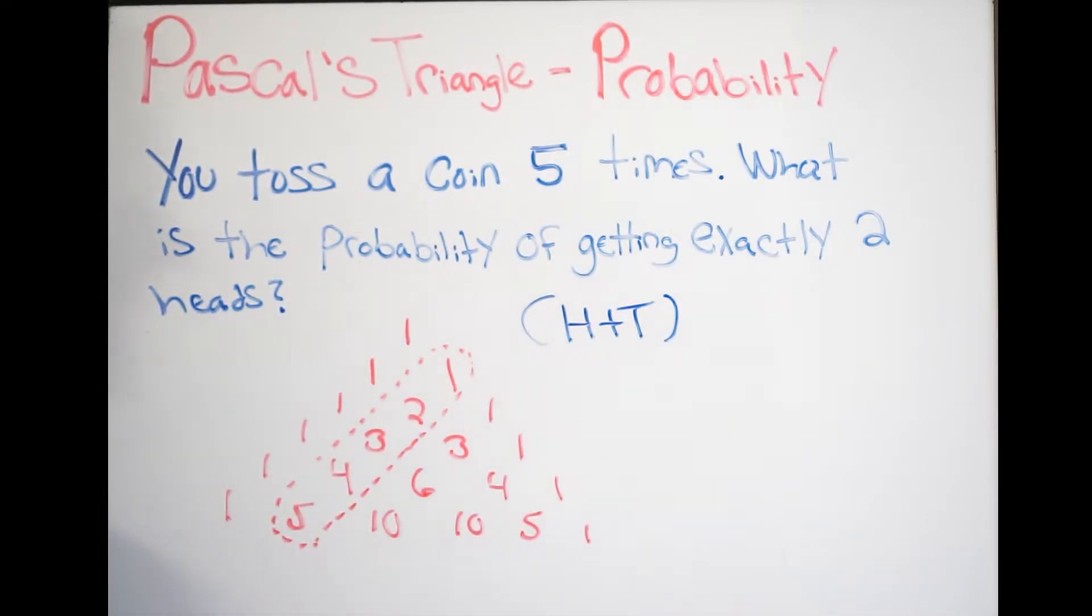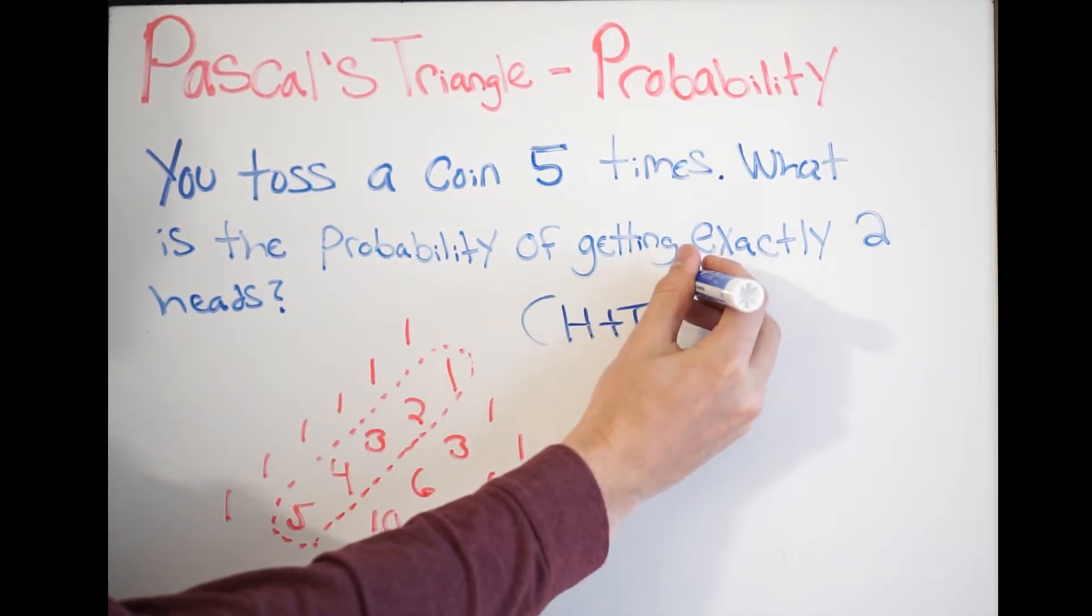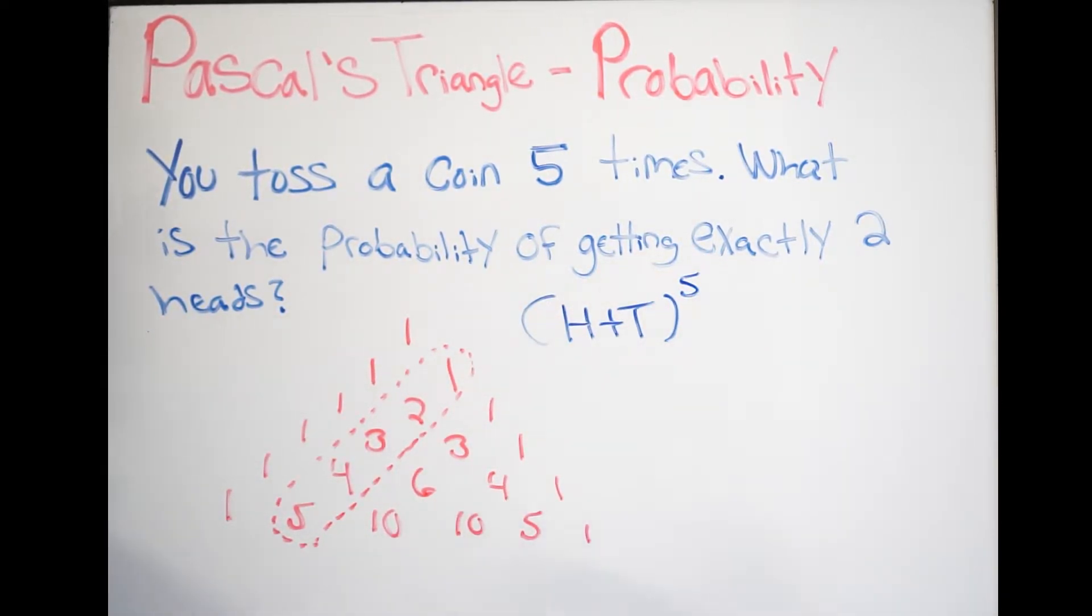H plus T. I could have wrote it as T plus H. It's not going to matter. And this is going to be to the fifth power, because we're going to toss it five times. So, again, since there's two possibilities, I can write this as a binomial, hence why I can use Pascal's triangle for this problem.